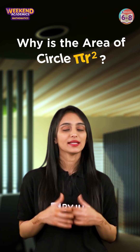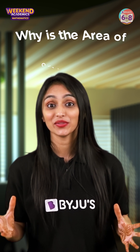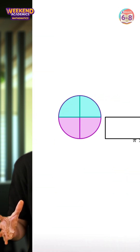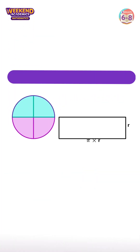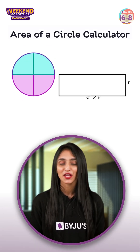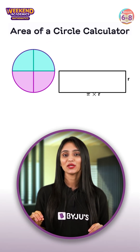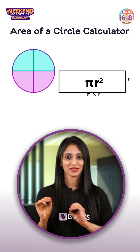Have you ever wondered why the area of a circle is pi r squared? Here is a cool method to visualize the area of a circle. First, let's consider a rectangle whose length is pi r units and breadth is r units. So the area of the given rectangle is going to be pi r squared.